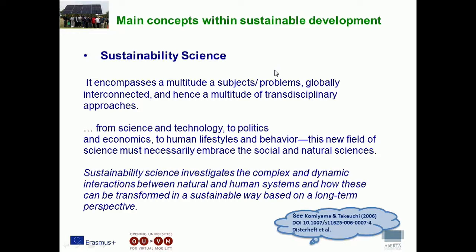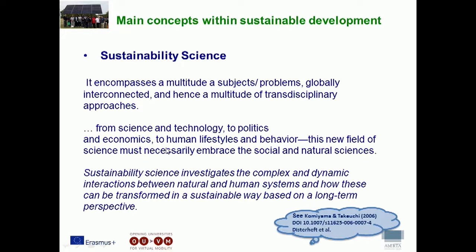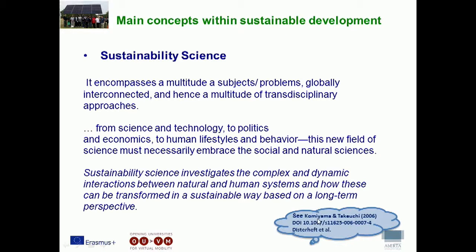This new emerging area of sustainability science is not a science by any usual definition. It is usually defined as a discipline that points the way towards a sustainable society. It encompasses a multitude of subjects and problems, globally interconnected, and hence a multitude of transdisciplinary approaches — from science and technology, to politics and economics, to human lifestyles and behaviour. This new field must necessarily embrace both social and natural sciences. Sustainability science investigates the complex and dynamic interactions between natural and human systems, and how these can be transformed in a sustainable way based on a long-term perspective. Further readings are suggested on the slides.